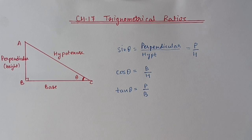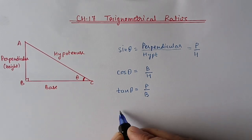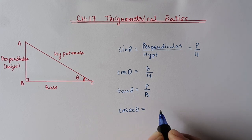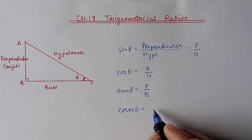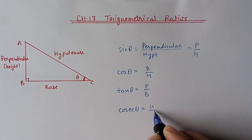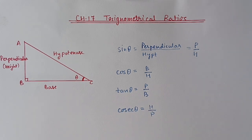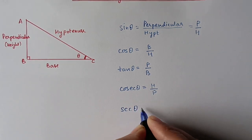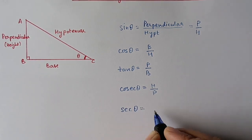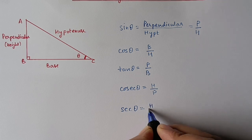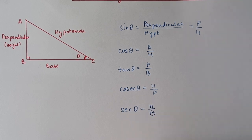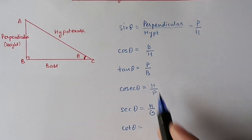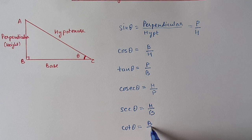Then we have three more ratios which are the reciprocals of these ratios. We have cosec theta, which is the reciprocal of sine theta — hypotenuse upon perpendicular. Then sec theta is the reciprocal of cos theta — hypotenuse upon base. Then we have cot theta, which is the reciprocal of tan theta — base upon perpendicular.